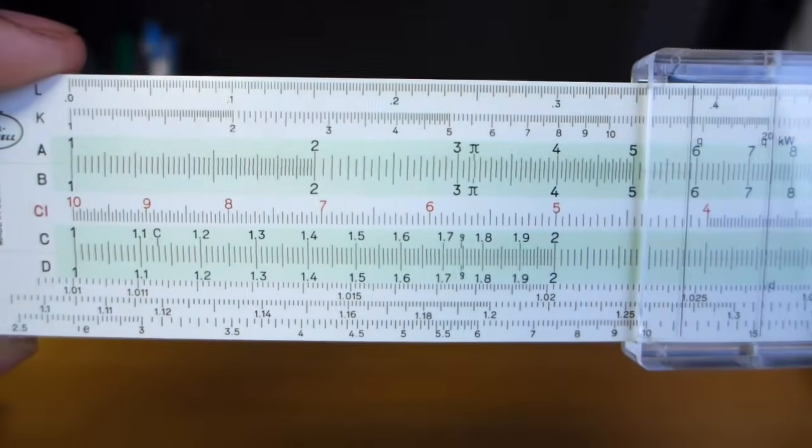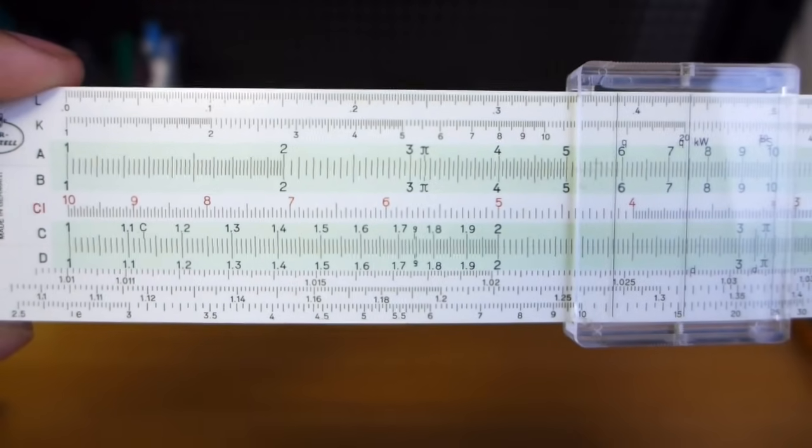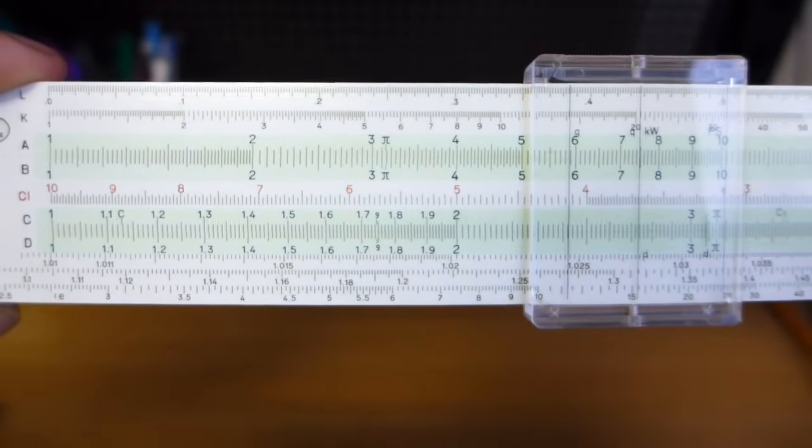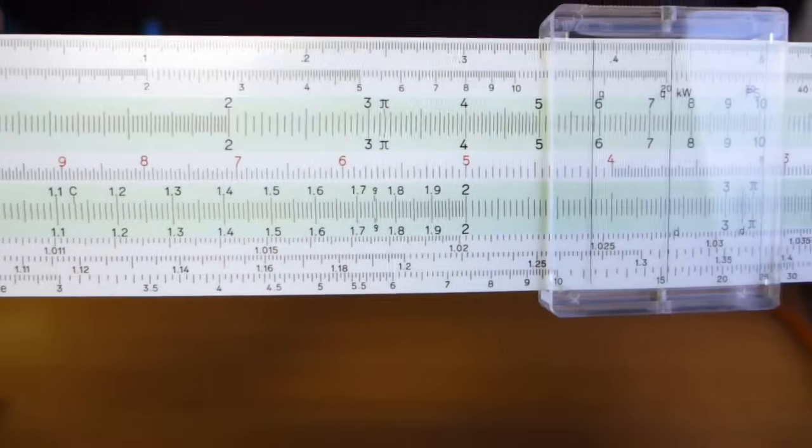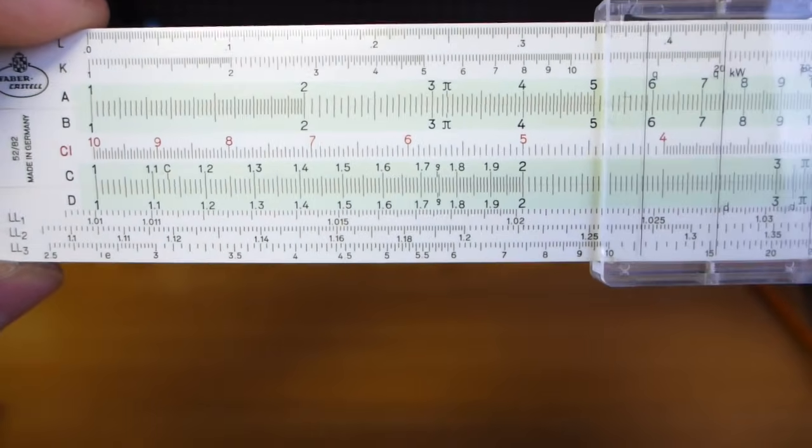What a slide rule does when it does multiplication is it adds the logarithm of two numbers, and the respective logarithms of two numbers, and then takes the anti-log of the sum, which gives you the product.